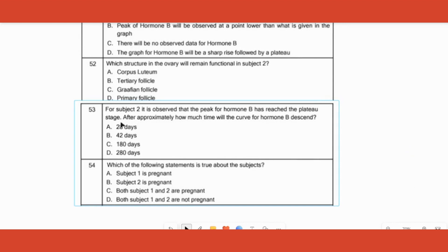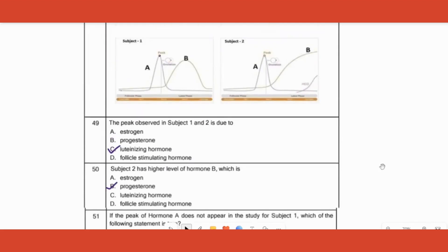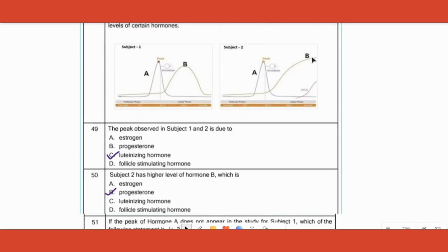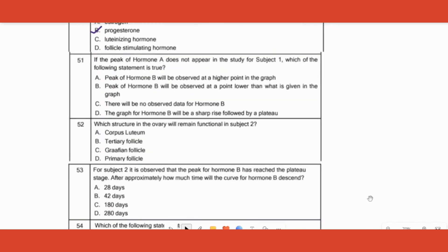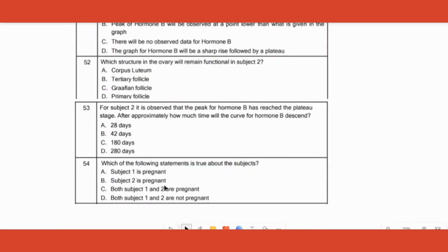If the peak of hormone A does not appear for the study, what will be the case? Obviously we cannot collect any data, so there will be no observed data for hormone B. In short, it means that LH doesn't peak, ovulation does not happen, B hormone has no significance at all.